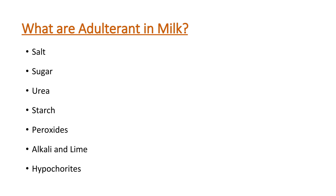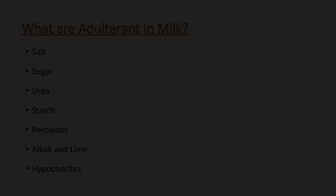In milk, we can find salt, sugar, urea, starch, peroxides, alkali and lime, and hyperchlorides as adulterants. Today we are going to learn how to analyze them in quality analysis of milk.